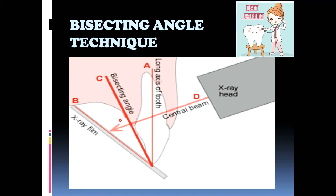Now the film is placed—we are imagining a line which is bisecting the angle. The central beam should be directed perpendicular to this imaginary line. This is the concept behind bisecting angle technique.